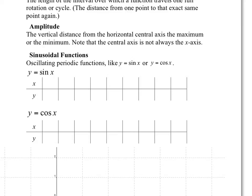Sinusoidal functions are oscillating periodic functions, like sine and cosine. Let's sketch the two. To sketch them, I'm going to find important points. Think about your unit circle — you can take it out if you'd like. Let's find values where x equals 0, pi over 2, pi, 3 pi over 2, and we're going to come back to 2 pi.